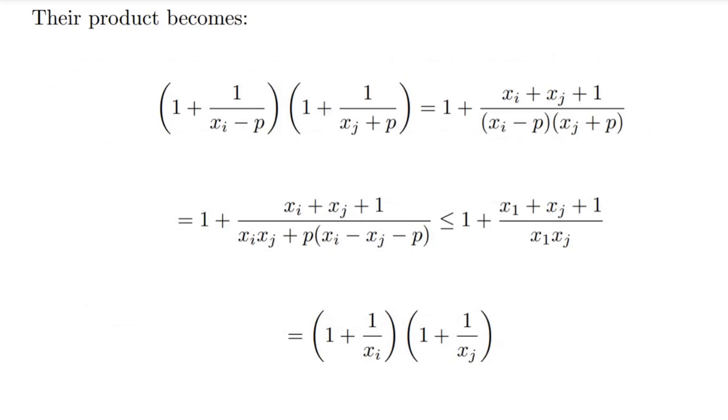Anyways, continuing on, substituting the new values of the variables in the product, we can see that the expression transforms into this thing right here. And this thing at the bottom, (x_i - x_j - p) multiplied by p, is a positive term from the selection of p inequality. And on removing a positive term from the denominator, we are increasing the value of the fraction, which happens to be the original product.